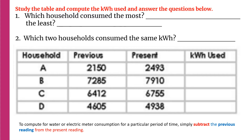Let's go through each blank — the kilowatt hours used by each household. For Household A, present reading minus previous reading gives us 343. That is from 2493 minus 2150, and the answer is 343 kilowatt hours.